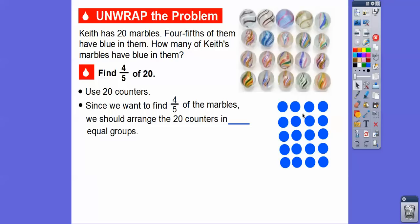So here we're going to use 20 counters. Here's 20 counters over here. And since we want to find four-fifths of the marbles, we should arrange the 20 counters in... Well, look at this denominator right here. It should be arranged in five equal groups. So we're going to go ahead and arrange them in these five equal groups.